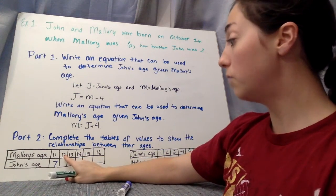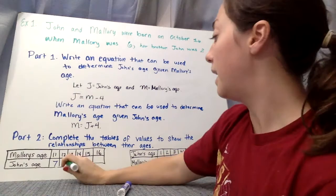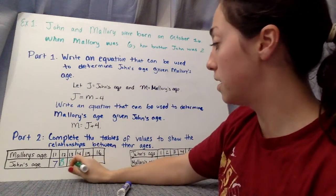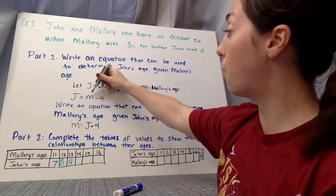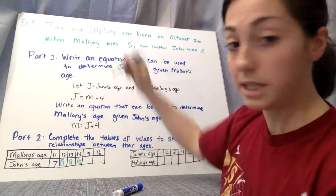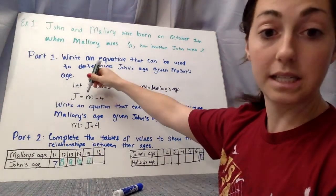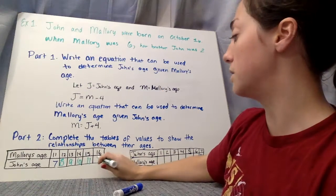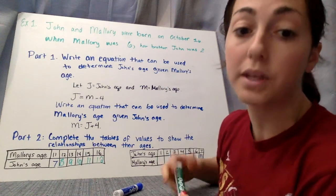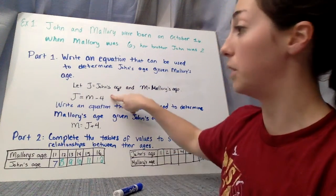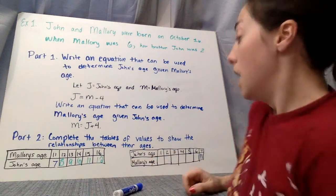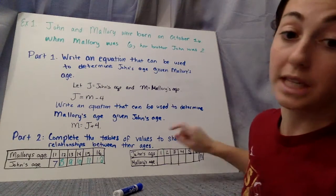If Mallory is 13, 13 minus 4 is 9. If Mallory is 14, 14 minus 4 is 10. If Mallory is 15, 15 minus 4 is 11. And if Mallory is 16, 16 minus 4 is 12. So now I have a bunch of data. If I wanted to graph this, if I wanted to make a mapping diagram, whatever the case is, I could do that. Because I already came up with an equation, and that helps me use my table really quickly.